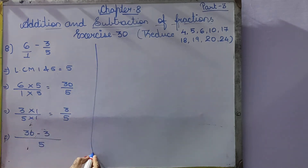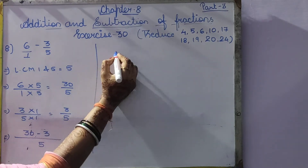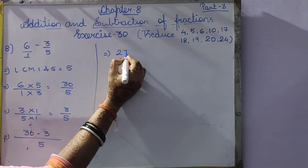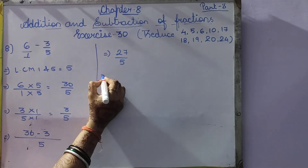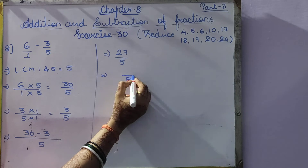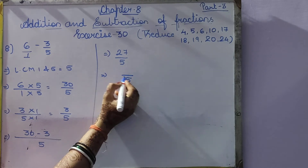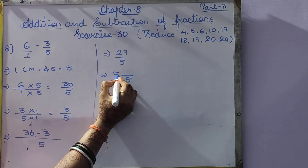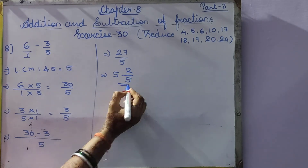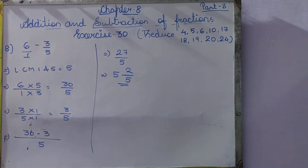Now we will separate: 30 minus 3 by 5. So 30 minus 3 is equal to 27 by 5. When we divide 27 by 5: 5 5's are 25, and the remainder will be 2. So 5 and 2 remainder gives us 5 remainder 2, meaning the answer is 5 and 2 by 5.